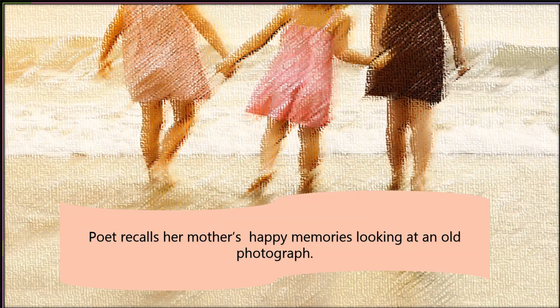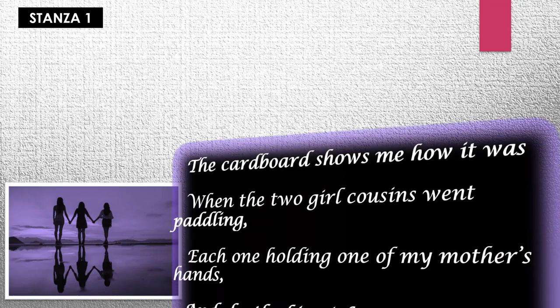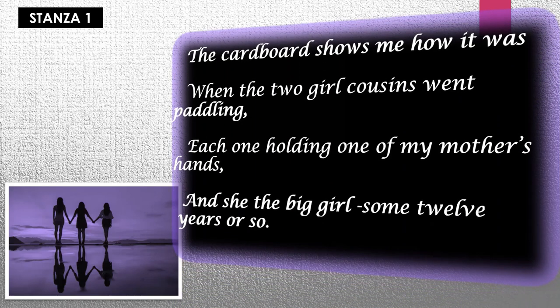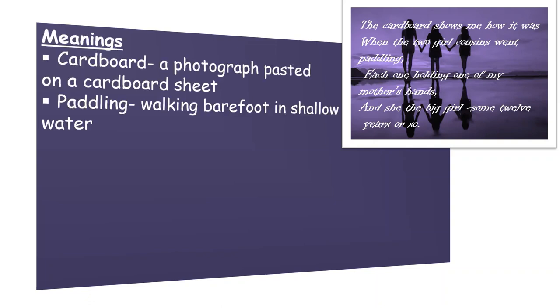Let us start with stanza one. The first few lines are: 'The cardboard shows me how it was when the two girl cousins went paddling, each one holding one of my mother's hands, and she the big girl, some twelve years or so.' The opening line tells us that the poet has found an old childhood photograph of her mother. The word 'cardboard' denotes a photograph pasted on a cardboard sheet, showing the poet's mother as a twelve-year-old girl with two cousins enjoying a seaside holiday.